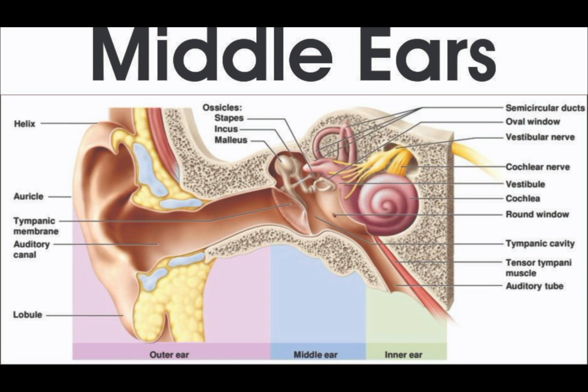Eustachian tube is a narrow tube that connects the middle ear to the back of the nose and throat. It helps to equalize air pressure in the middle ear and drain fluid from the ear. Oval window is a membrane-covered opening that separates the middle ear from the inner ear. The stapes bone transmits sound vibrations to the oval window, which creates fluid waves in the inner ear.